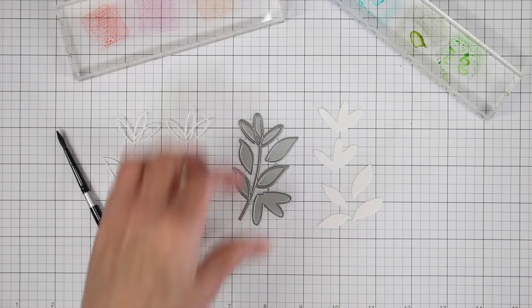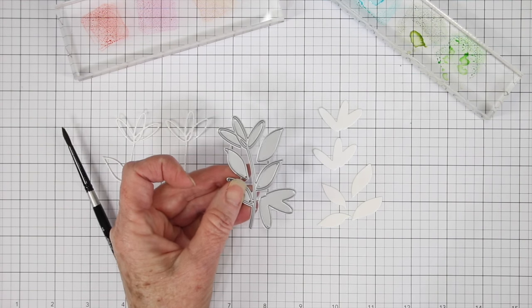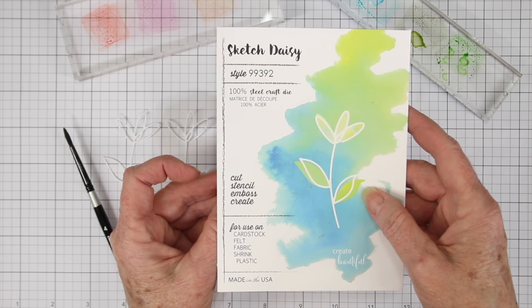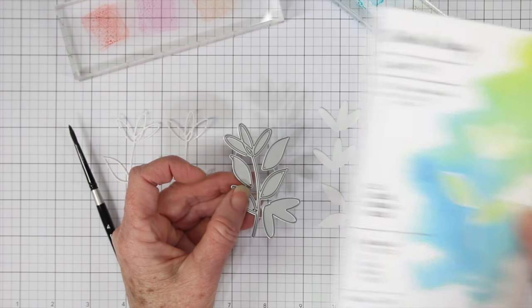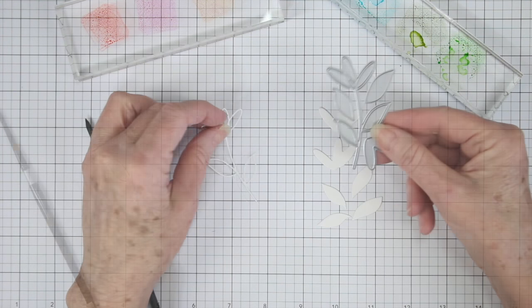For my flower, I'm using the Sketch Daisy from Memory Box, and it has an inner and outer die, so it cuts the little frame, and it also cuts little pieces that can sit under the frame. So I've cut these from some watercolor cardstock, and I'll be painting those with some distress ink.